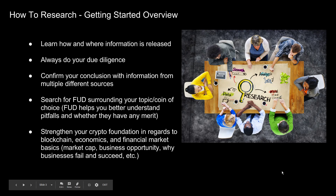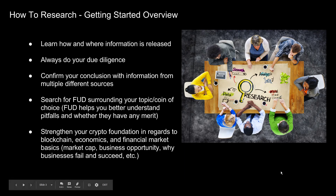When you're getting started in researching any type of topic, you need to learn how this information is released into the public and where you can go to get that information. For the crypto world, the majority of information is released either directly by the company on their website or through Twitter. You want to make sure that you're always doing your due diligence, confirming your conclusion or decision with information from multiple different sources.